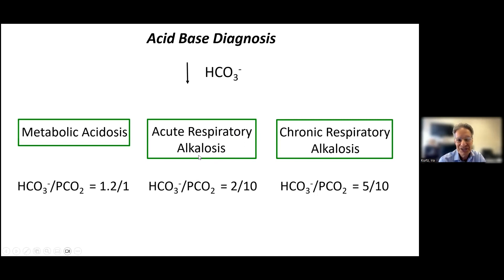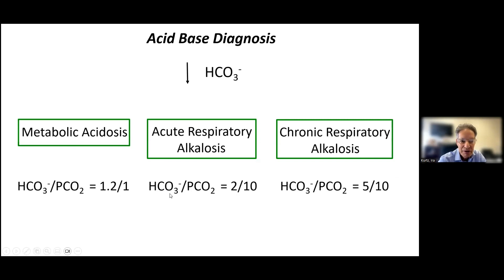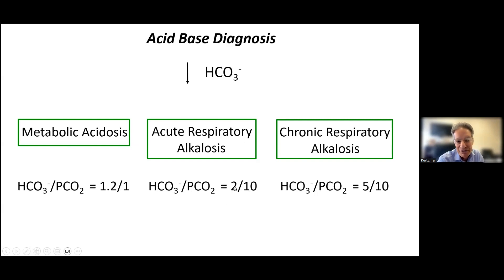In acute respiratory alkalosis, the bicarbonate doesn't get that low. It depends how far the PCO2 drops — for every 10 fall in PCO2, the bicarbonate falls two, or for every 5 fall in PCO2, the bicarbonate falls one. So if the PCO2 falls from 40 to 10, the most the bicarbonate could fall would be about three — from 25 to 22. Even if the PCO2 fell from 40 to zero acutely, the most the bicarbonate could fall would be by eight. So it really can't go as low as it can in other acid-base disorders.